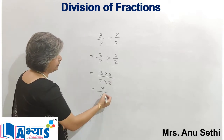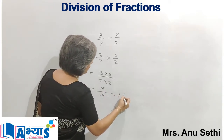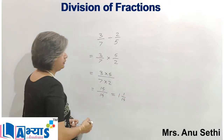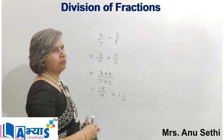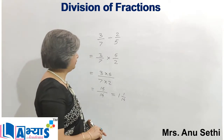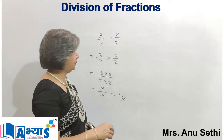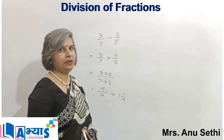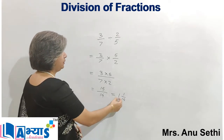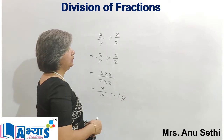So we can convert it into a mixed fraction: 1 and 1 by 14, because when we divide 15 by 14, we get 14 into 1 equals 14, with a remainder of 1. So the mixed fraction will be 1 and 1 upon 14.